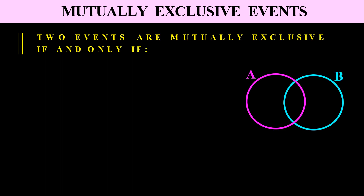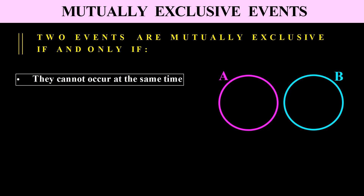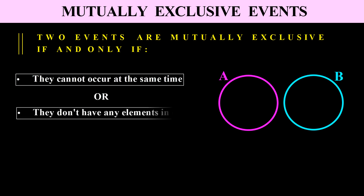Let's consider two events A and B. Here you can see A and B overlap, so if they are mutually exclusive they should not overlap — in other words, they cannot occur at the same time. If they don't occur at the same time, they are mutually exclusive. They do not have any elements in common. For example, a number cannot be both even and odd, so even and odd are mutually exclusive.